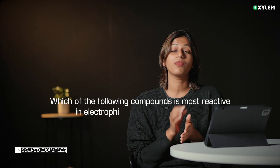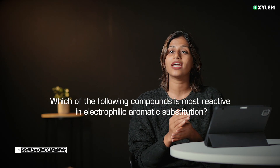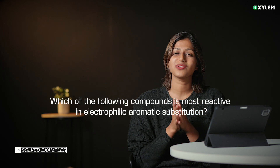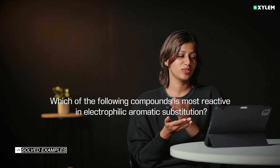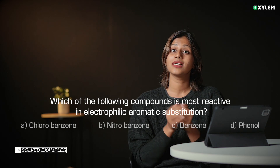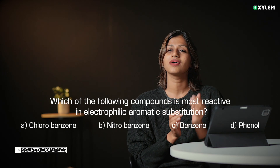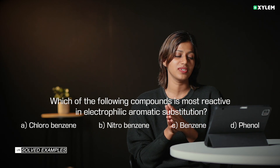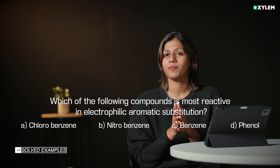Which of the following compounds is most reactive in electrophilic aromatic substitution? The options are: chlorobenzene — chlorine is an electron withdrawing group; nitrobenzene — nitro is again an electron withdrawing group; benzene; and phenol.